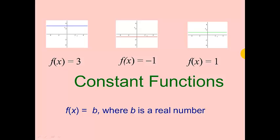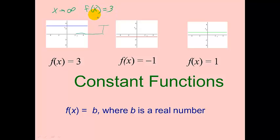If we want to know the end behavior of the constant function, we can see on this particular one, as x approaches infinity, as x gets larger and larger, we always stay on three. So f(x) is not even approaching — it always equals three. And as x approaches negative infinity, this function again always equals three.